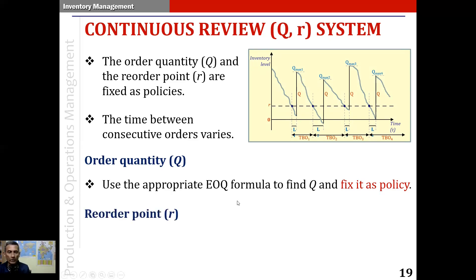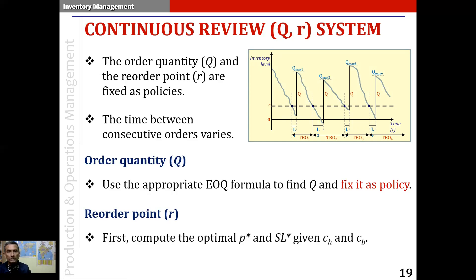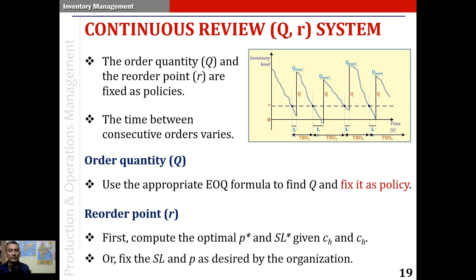To find the reorder point, we first compute the optimal P-star and SL-star. P-star is the proportion of stockout and SL-star is the service level, given the unit holding cost and the backorder cost. Alternatively, we can fix the service level and P as desired by the organization — it need not always go for the optimal proportion of stockout and service level.